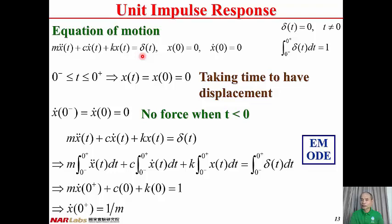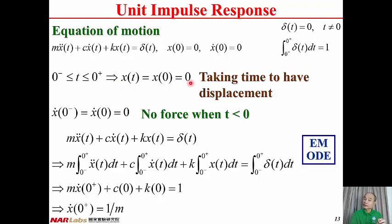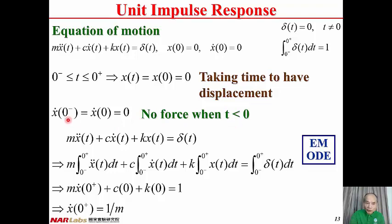Since δ(t) tends to infinity when T = 0, we cannot solve this equation directly — we must integrate it. For displacement: it always takes time to develop, so when T is near zero, x(t) is constant and equal to zero. Because there is no force when T < 0, there is no change in velocity, so x-dot(0−) = x-dot(0) = 0.